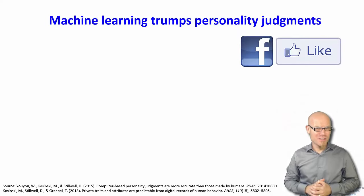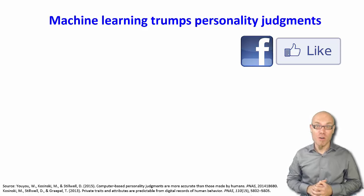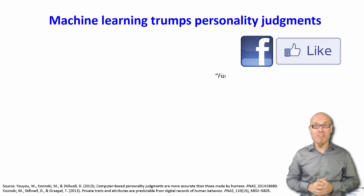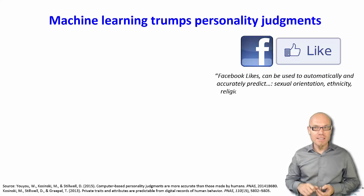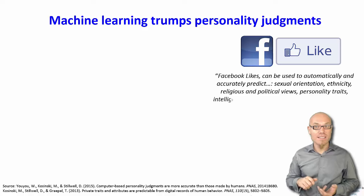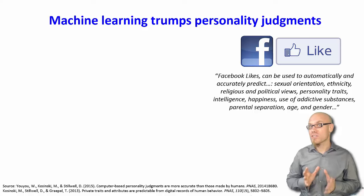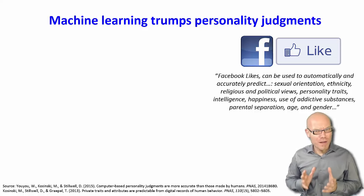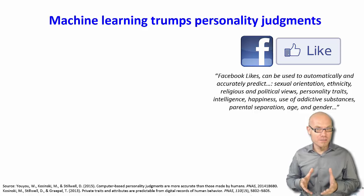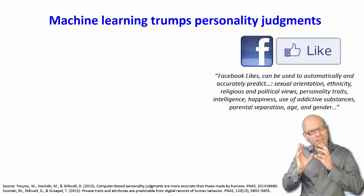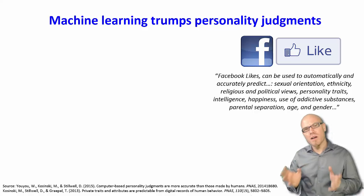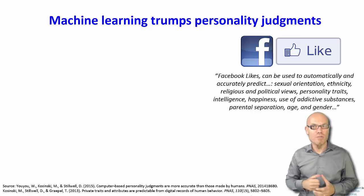Sometimes these machine learning algorithms know more about ourselves than we know about ourselves. For example, Facebook likes can be used to automatically and accurately predict sexual orientation, ethnicity, religious and political views, personality traits, intelligence, happiness, and the use of addictive substances — all inferred just by knowing your Facebook likes. Parental separation can also be induced just by knowing your Facebook likes, as well as age, gender, and political views.